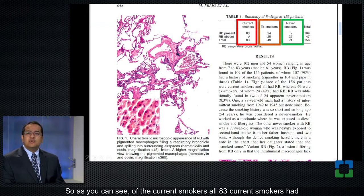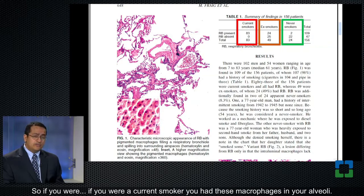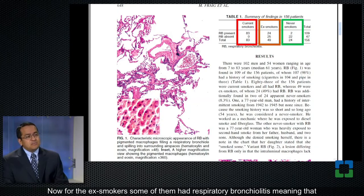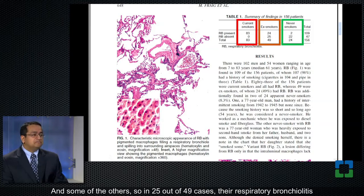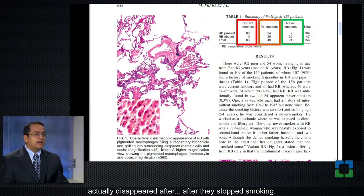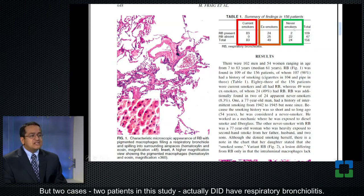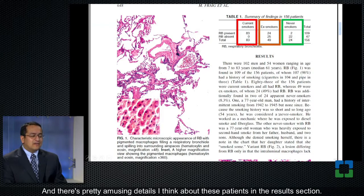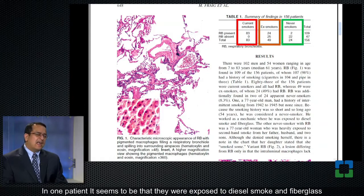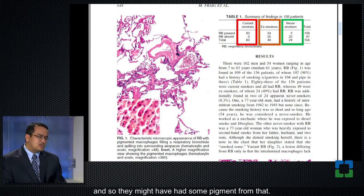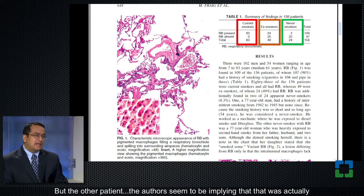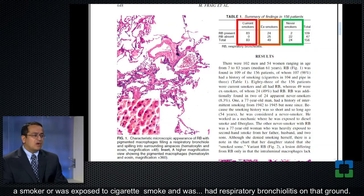As you can see, of the current smokers, all 83 current smokers had respiratory bronchiolitis in their lungs. For the ex-smokers, some of them had respiratory bronchiolitis — the macrophages hadn't gone away even though they'd stopped smoking. In 25 out of 49 cases, the respiratory bronchiolitis actually disappeared after they stopped smoking. The green box refers to the never-smokers. You would expect that never-smokers would never have respiratory bronchiolitis, and that is by and large true, but two patients in this study actually did have it. In one patient, they were exposed to diesel smoke and fiberglass, so they might have had some pigment from that. The other patient, the authors seem to be implying, was actually a smoker or was exposed to cigarette smoke and had respiratory bronchiolitis on that ground.